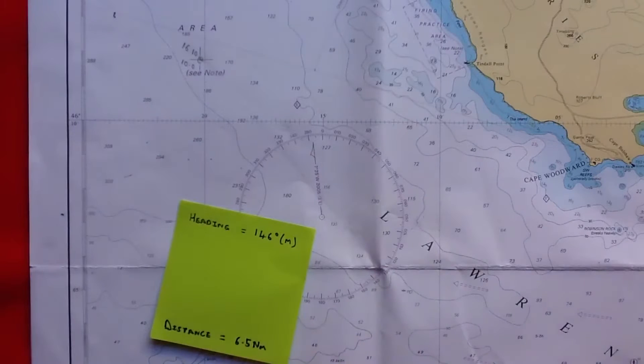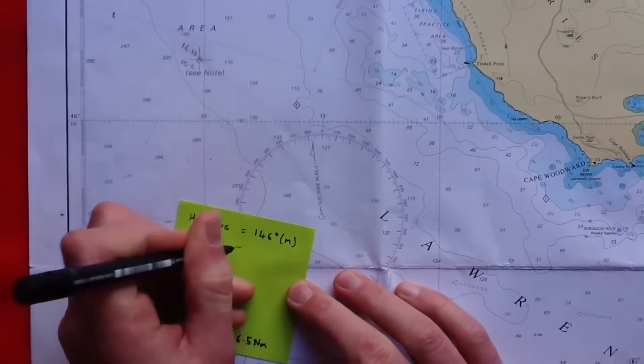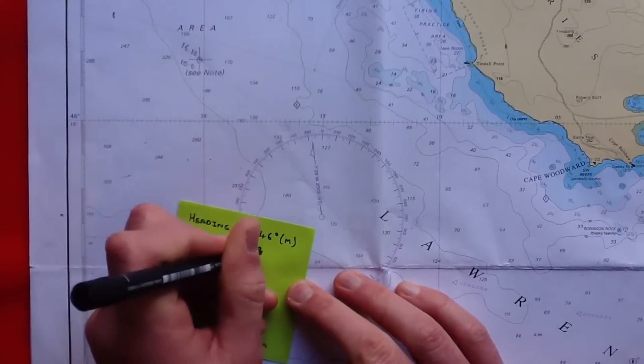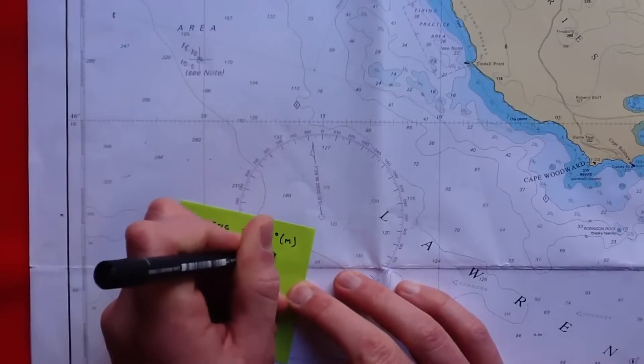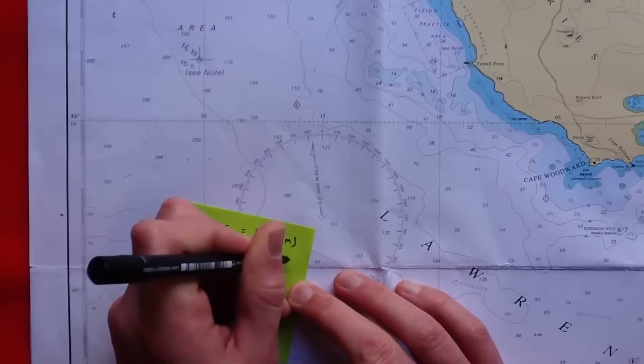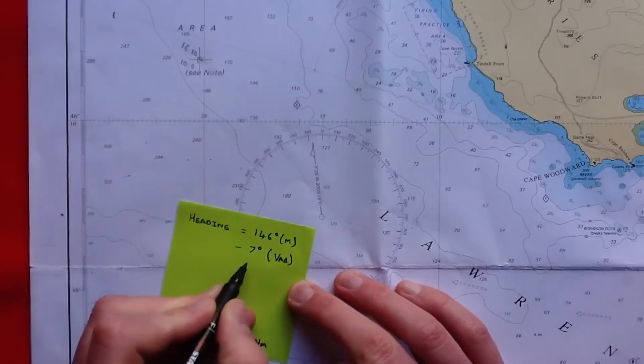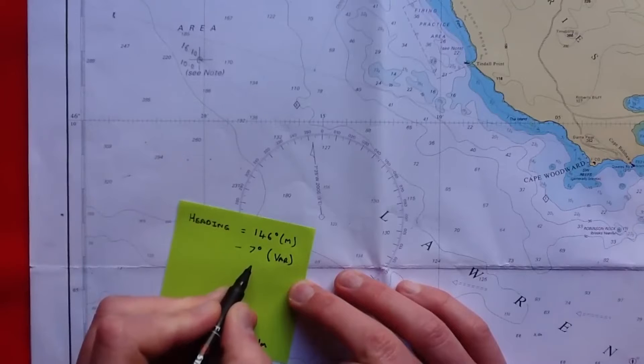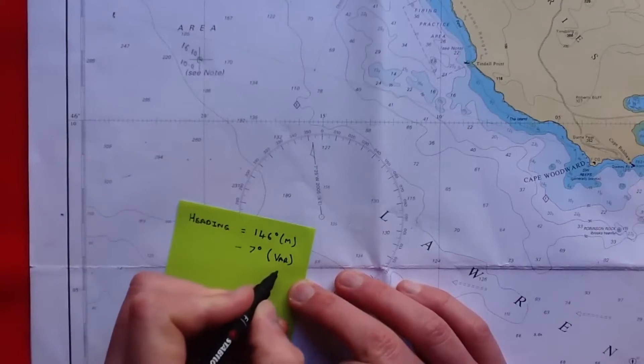So in this case we're going to subtract 7 degrees from our magnetic heading to allow for variation. If you're not sure why we subtracted as opposed to added in this case, have a look at our notes on variation.